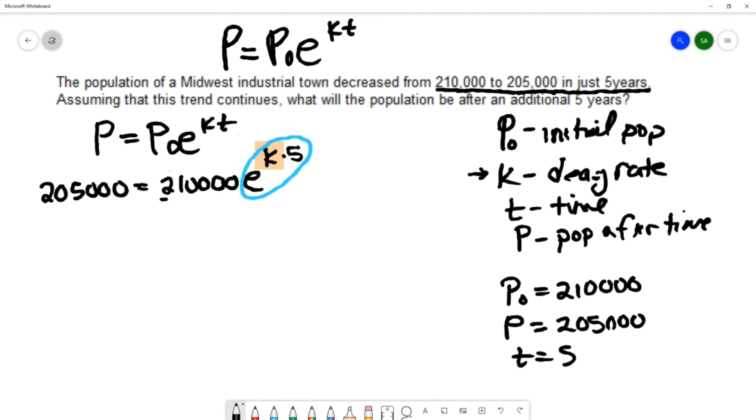We're going to divide both sides by 210,000 so that we can isolate that exponential portion.